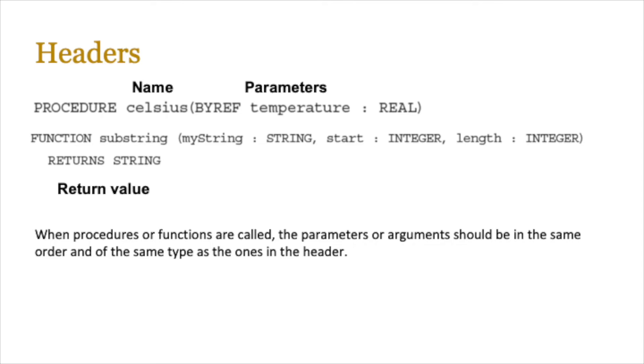Now when using procedures or functions, or when you're calling them from the main program, the arguments that you're going to be passing to the function or the procedure have to be in the same order as the ones specified in the header statement. So you can't simply send the starts and the length first, and then the my string, string, they have to be in the order of my string, start and length. So just be aware of that.